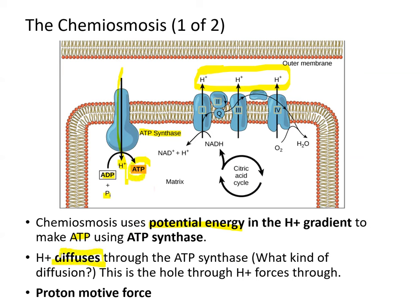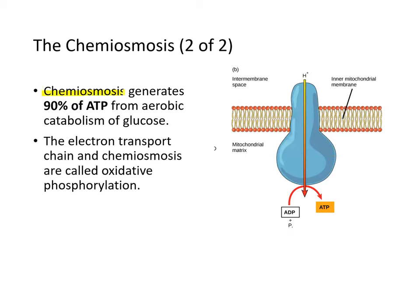The proton diffusing through ATP synthase is facilitated diffusion. The proton motive force drives protons through the ATP synthase — the hole in the membrane. Chemiosmosis generates 90% of ATP from aerobic catabolism of glucose. The electron transport chain and chemiosmosis collectively are called oxidative phosphorylation.